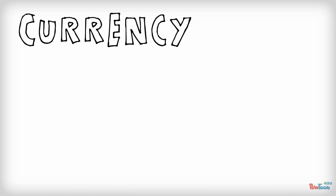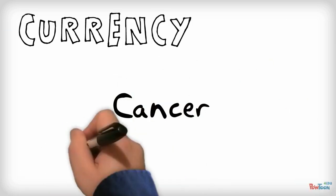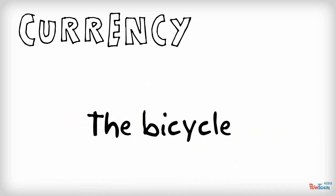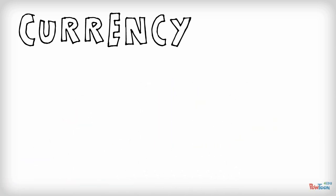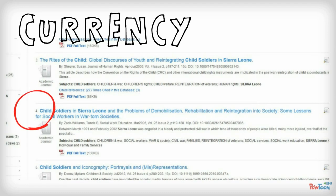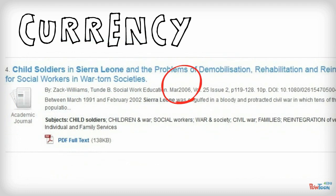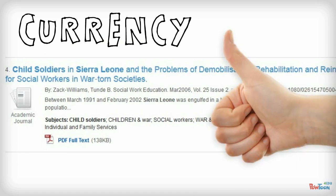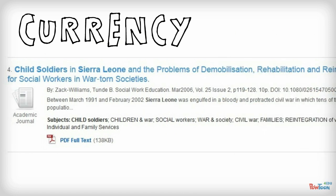Next, currency. For some topics, current information is really important, and for other topics, not so much. It's important that you know the difference for your topic. This article was published in 2006, shortly after the end of Sierra Leone's Civil War, so it's a good match. If this article were published before the Civil War began, we'd probably not use it.